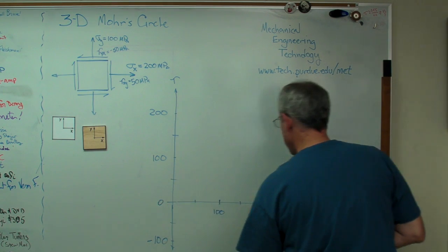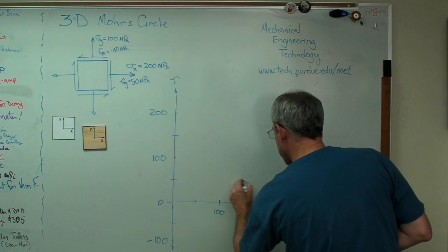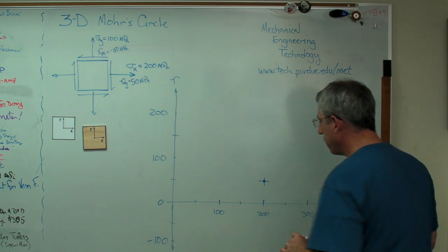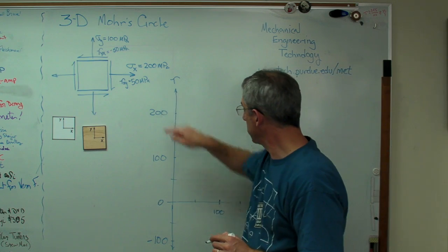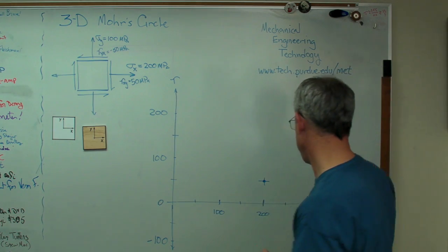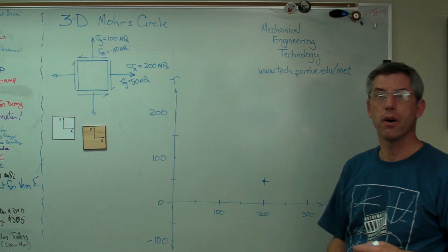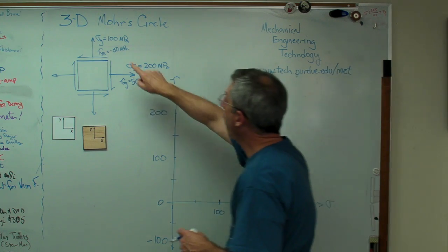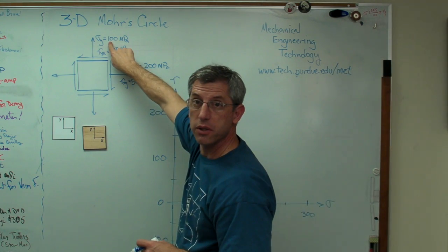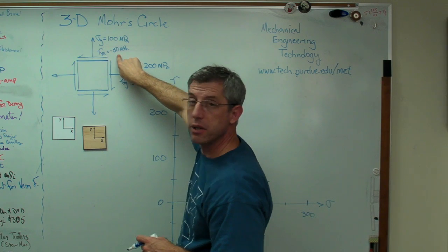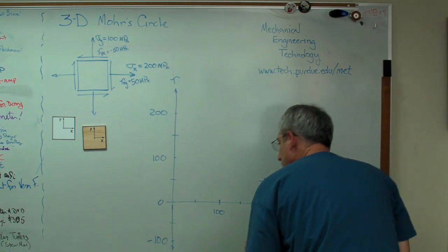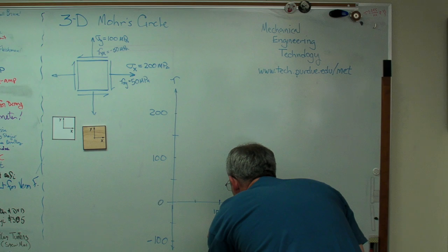I've got in the x-face, there's my first data point, 200 megapascals and 50 megapascals. And that looks about right. Now, on the y-face, I have 100 megapascals normal stress and minus 50 shear. So that's going to be right about there.